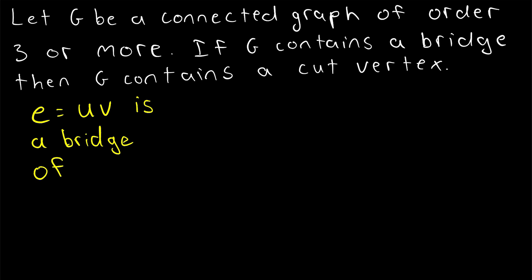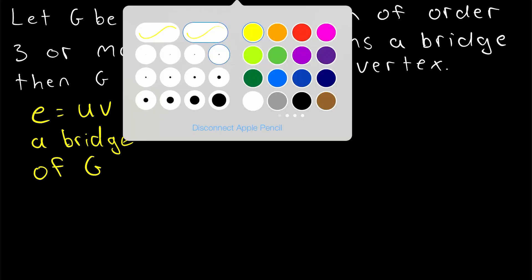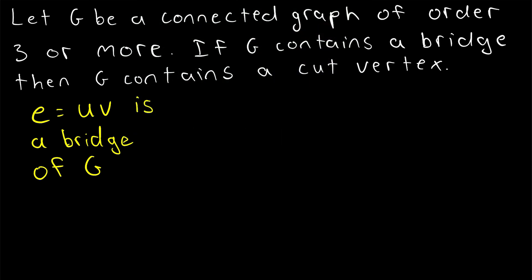So this is a bridge of our graph G. We want to show that since G has a bridge, and it might have more than just this one bridge, but it has to have at least one bridge, we want to show that since it has this bridge, it must have a cut vertex. And of course, there's more to this graph than just this bridge, but for the purposes of demonstrating this proof, we really only need to focus on the bridge.